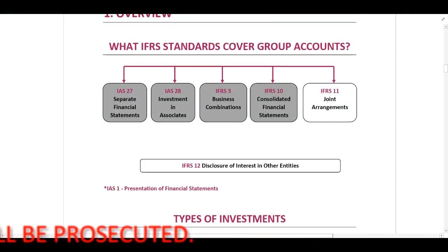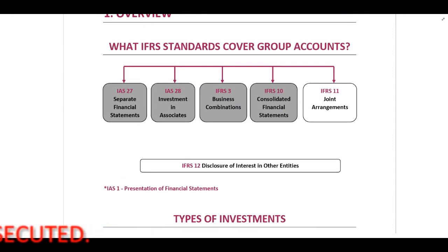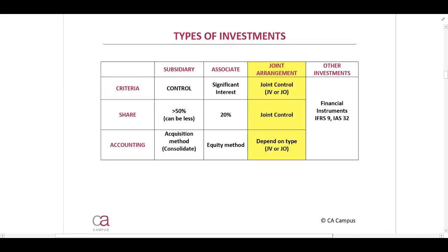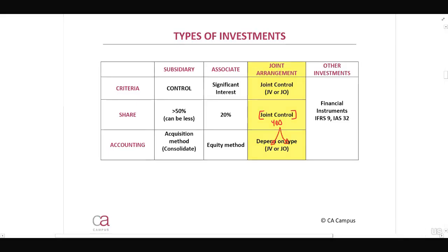Where are we currently with our IFRS standards covered by our group accounts? We have already discussed IAS 27, IAS 28, IFRS 3, and IFRS 10. We are now busy with IFRS 11, our joint arrangements. Remember that a joint arrangement has to include joint control, and once we have determined that this is a joint arrangement, it can either be a joint venture or a joint operation.